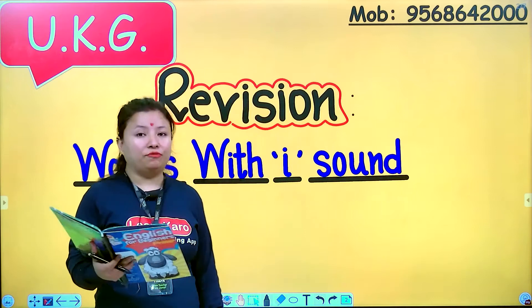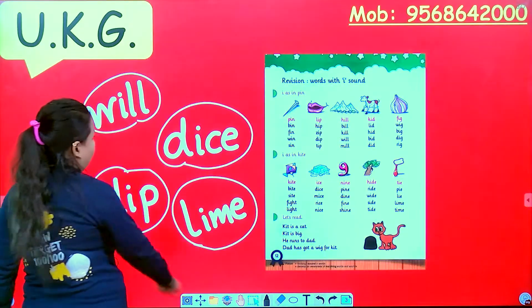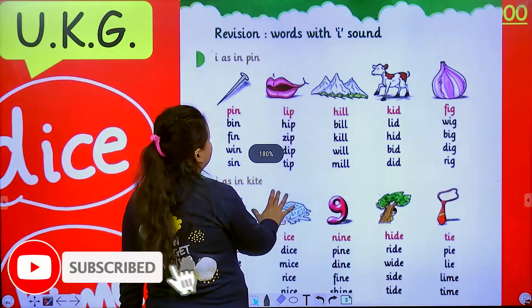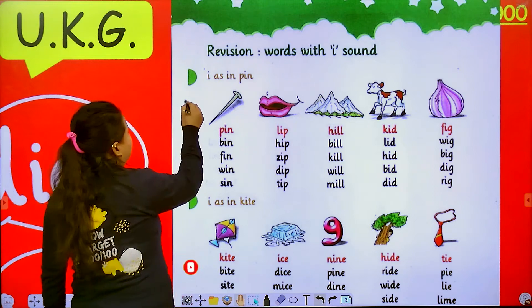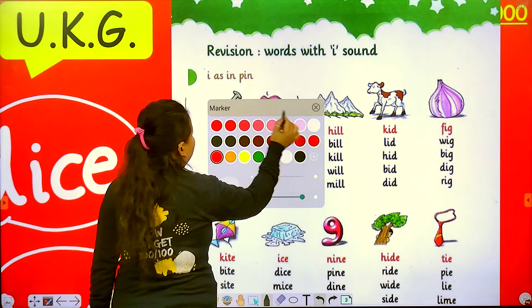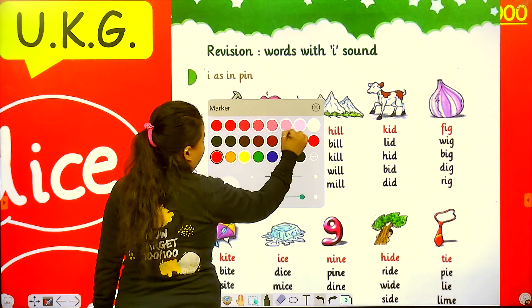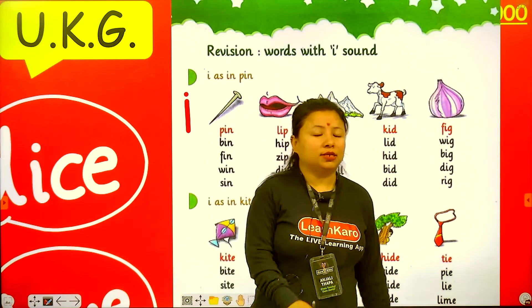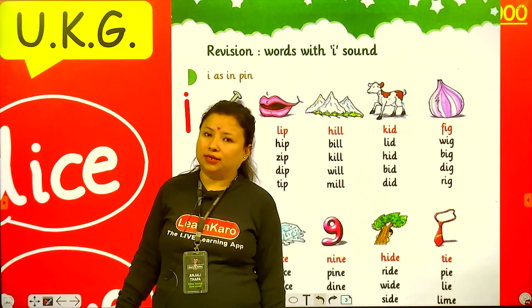Now today it's time to revise I sound. So open your book at page number 12. This is I. I sounds like E and sometimes like I.